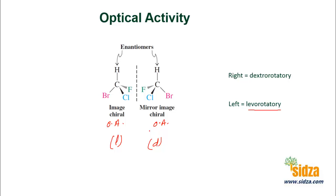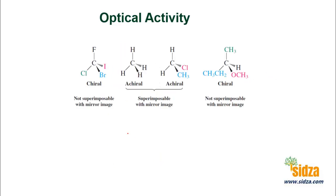Enantiomers have opposite optical activity — if this molecule is dextrorotatory, then its enantiomer mirror image will be levorotatory. So this molecule over here is optically active, and its mirror image — here we have fluorine, iodine, bromine, and chlorine — is also chiral. These two molecules are enantiomers: non-superimposable mirror images that you cannot superimpose.